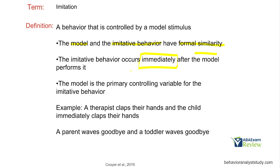If someone models something and 20 minutes later the client engages in the behavior, that's not technically imitation. The model has to be the primary controlling variable for the imitative behavior. For example, if I say 'clap your hands' and then clap my hands, what's really the primary controlling variable — is it me clapping my hands, or is it the verbal SD 'clap your hands'? Imitation should occur where the model is the primary controlling variable for the imitative behavior.